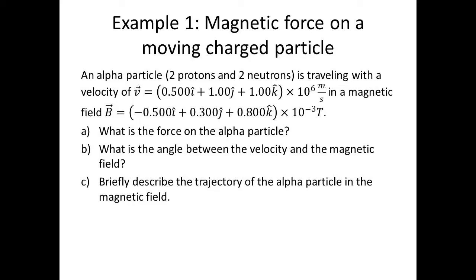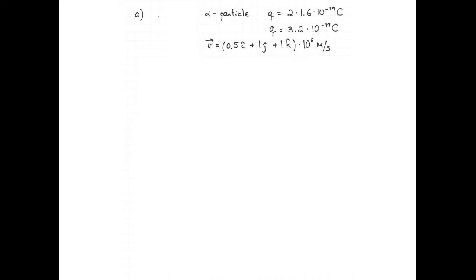Here's an example of calculating the magnetic force on a moving charged particle. An alpha particle, made of two protons and two neutrons, is traveling with a velocity V equal to 0.5 i-hat plus 1 j-hat plus 1 k-hat times 10 to the negative 6 meters per second, in a magnetic field B equal to negative 0.5 i-hat plus 0.3 j-hat plus 0.8 k-hat milli-Tesla. What is the force on the alpha particle? What is the angle between the velocity and the magnetic field?